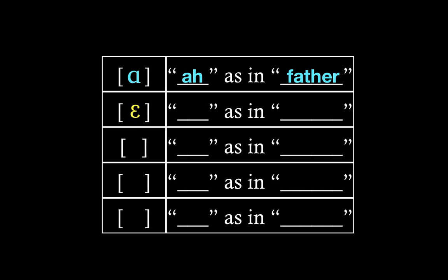Our next symbol, the backwards three or cursive E, represents the sound EH as in bed. The next symbol looks like a lowercase I, but it's actually E as in see. The next symbol is O as in go. And the last symbol is U as in zoo.